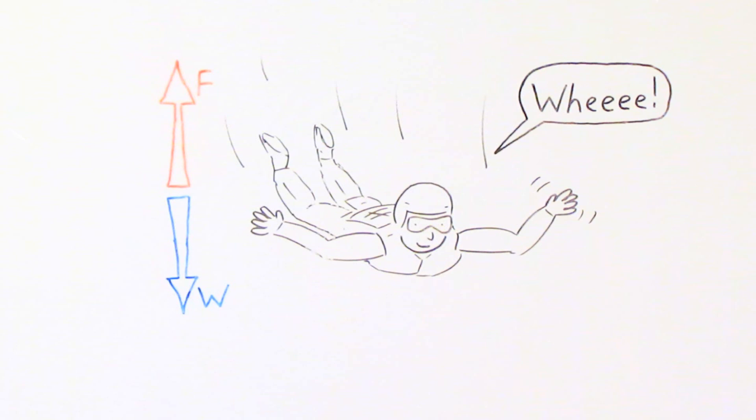And eventually the air resistance is going to get so great that he won't be able to accelerate anymore because that air resistance will have balanced out his weight. He is still falling here. He's not stopped, he's still moving downwards. But that air resistance has got so big that he's now reached his terminal velocity. He can't accelerate any faster than this.